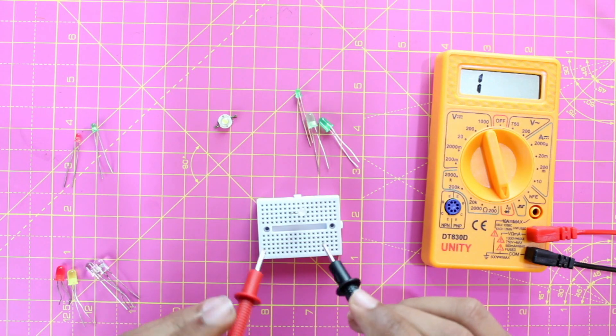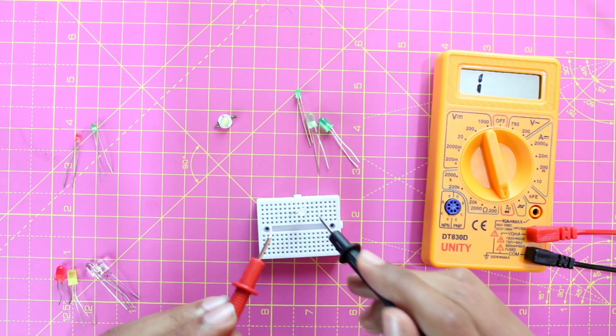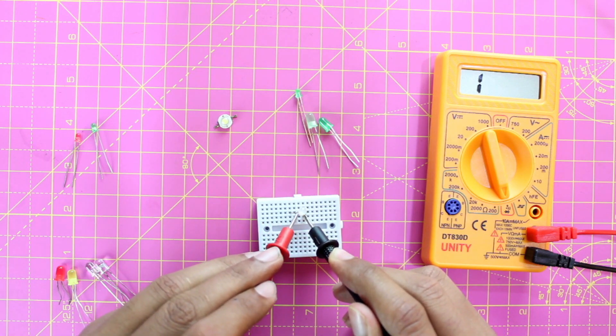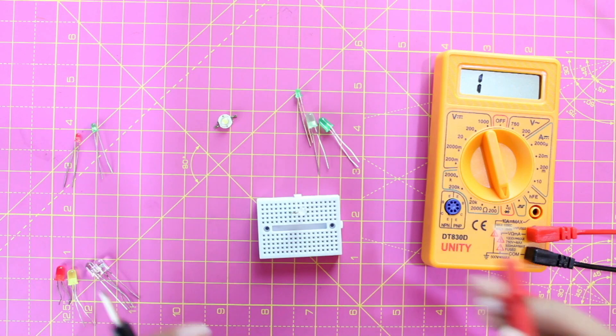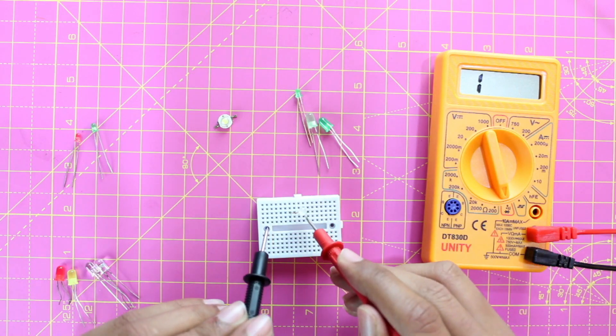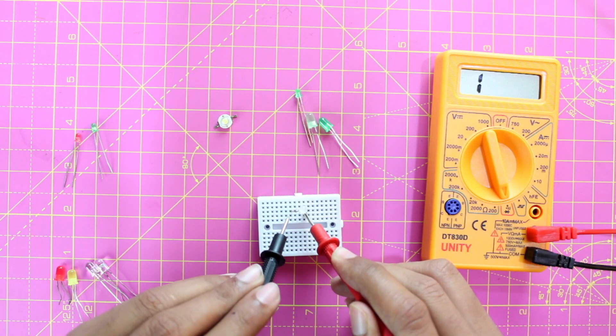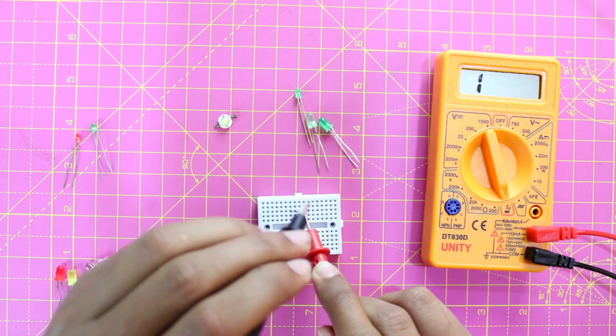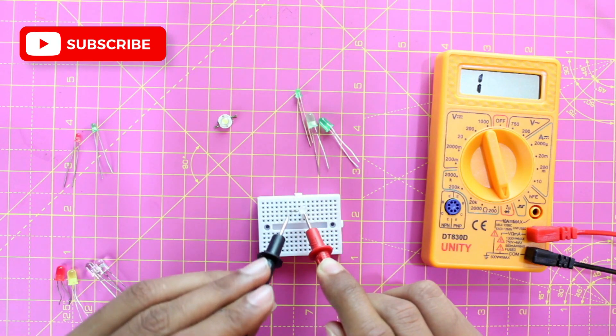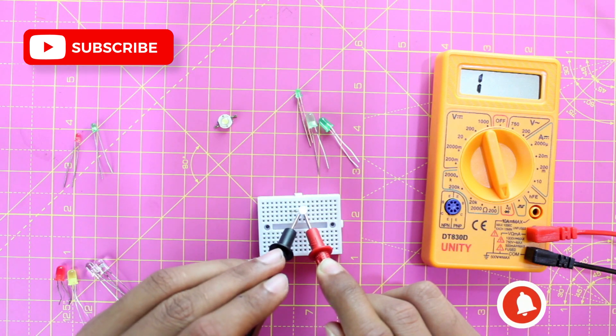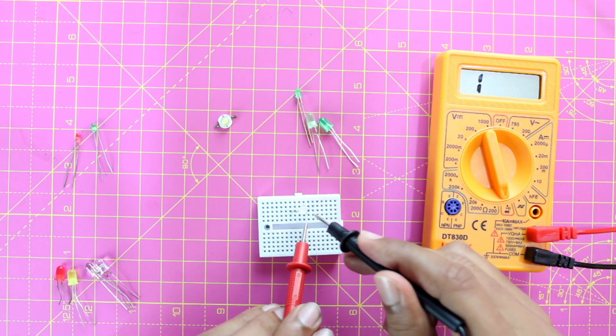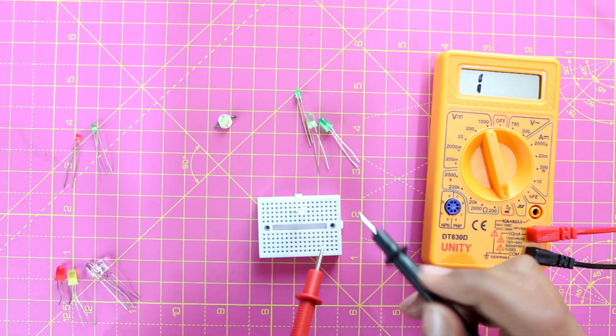We get nothing, so let's reverse the polarity. We'll place the positive lead on the largest pin and the negative lead on the smallest pins. As you can see, we got green, blue, and red. This RGB LED is also working.